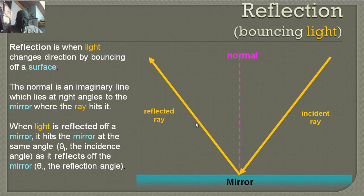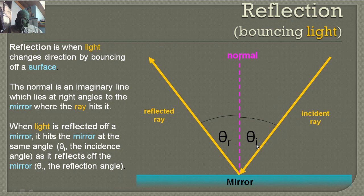When light is reflected off a mirror, it hits the mirror at the same angle, which we call theta i — i for incidence, the incidence angle — as it reflects off the mirror. We call that the reflected angle, theta sub r. These angles are going to be equal.